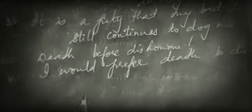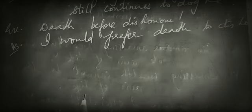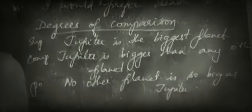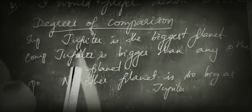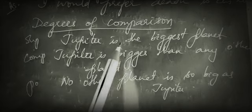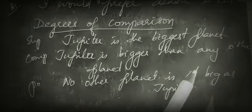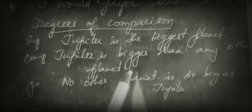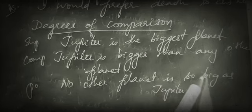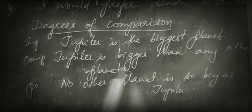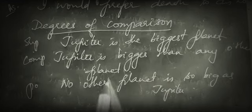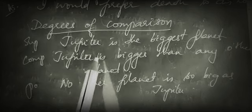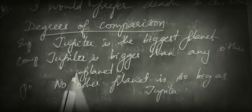Now let us move to interchanging degrees of comparison. We will go through one or two examples. For instance, 'Jupiter is the biggest planet' is in the superlative form. Depending on what is asked, you change accordingly. If you need to change to comparative, it becomes 'Jupiter is bigger than any other planet.'